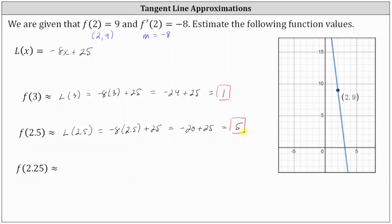Finally, f of 2.25 is approximately L of 2.25, which equals negative 8 times 2.25 plus 25. Negative 8 times 2.25 equals negative 18, and negative 18 plus 25 equals positive 7. So our estimate for f of 2.25 is 7.